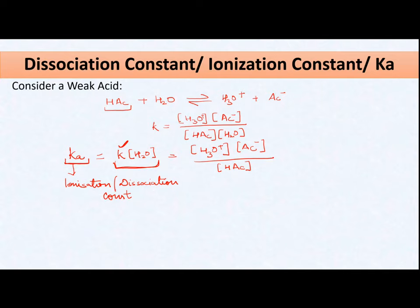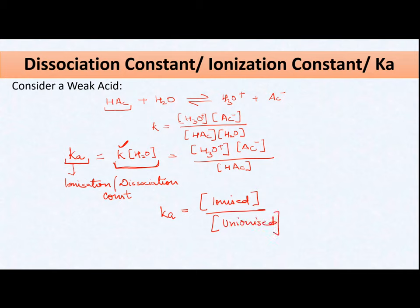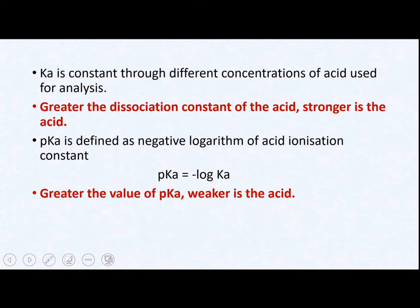To summarize: Ka equals the total concentration of the ionized sample divided by the concentration of the unionized acid. This Ka is nothing but the ionization or dissociation constant.